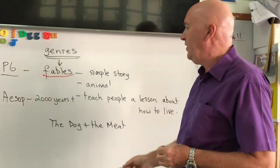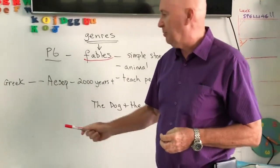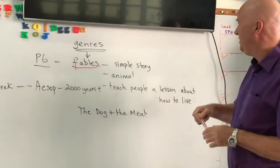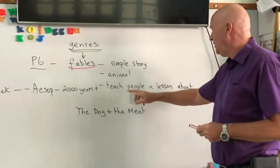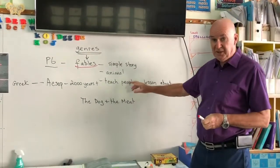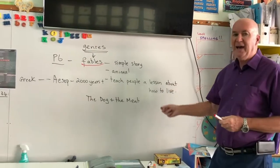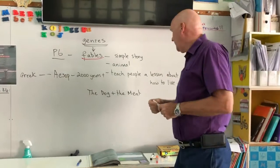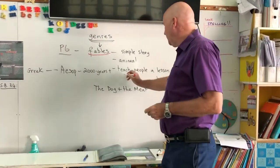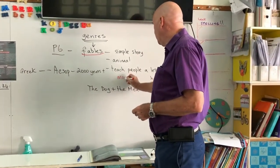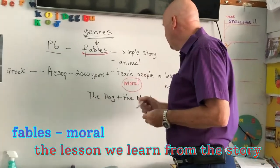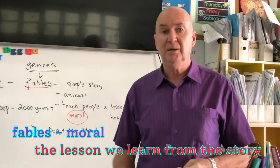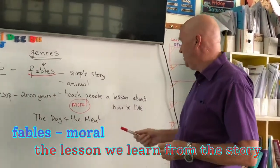The most famous fables were written over 2,000 years ago by a man from Greece called Aesop. Basically, the idea of a fable is to teach people, particularly children, a lesson about how they should live. The word we use for this lesson is called the moral of the story — what's the lesson we learn from the story? What is the moral of the story?